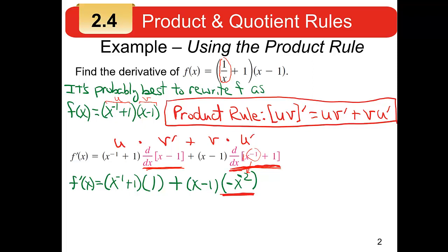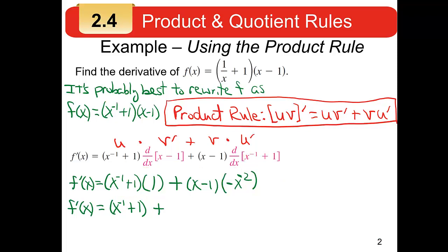Now it's a matter of multiplying things out. When you multiply something by 1, you just get that thing. On the other part, you have to distribute. Take the minus x to the minus 2 and multiply it by x — that's x to the 1 — and when you multiply with like bases you add the exponents. Then minus 1 times minus x to the minus 2: a negative times a negative is positive. Be very careful about your signs.